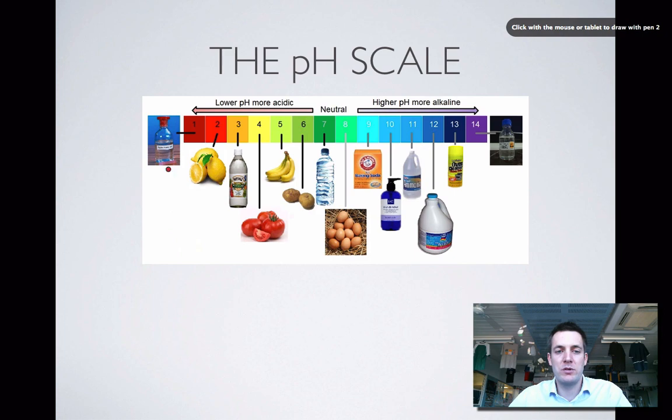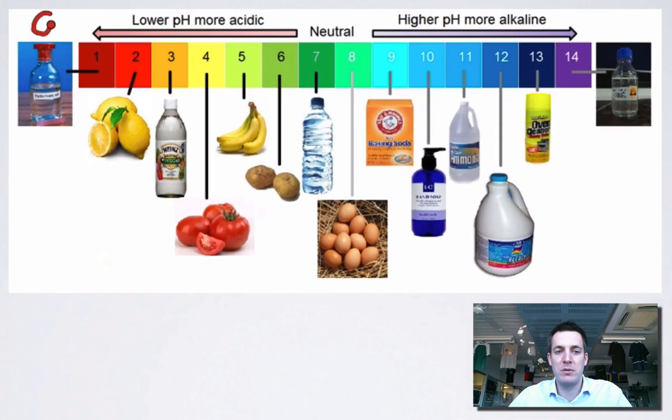Well, here is the pH scale, which people often picture as being from 1 to 14, but it's probably a bit better if we think of it as going from 0 to 14, even though you can have numbers outside of this range too. Low pHs, so that's pHs of less than 7, are considered to be acidic pHs. pHs higher than 7 tend to be considered alkaline or basic. And in the middle we've got these neutral pHs. In actual fact, you don't have to have a pH of 7 to be neutral, but if you're in year 11, we won't worry about that. It's only in year 12 where you have to really cover that.